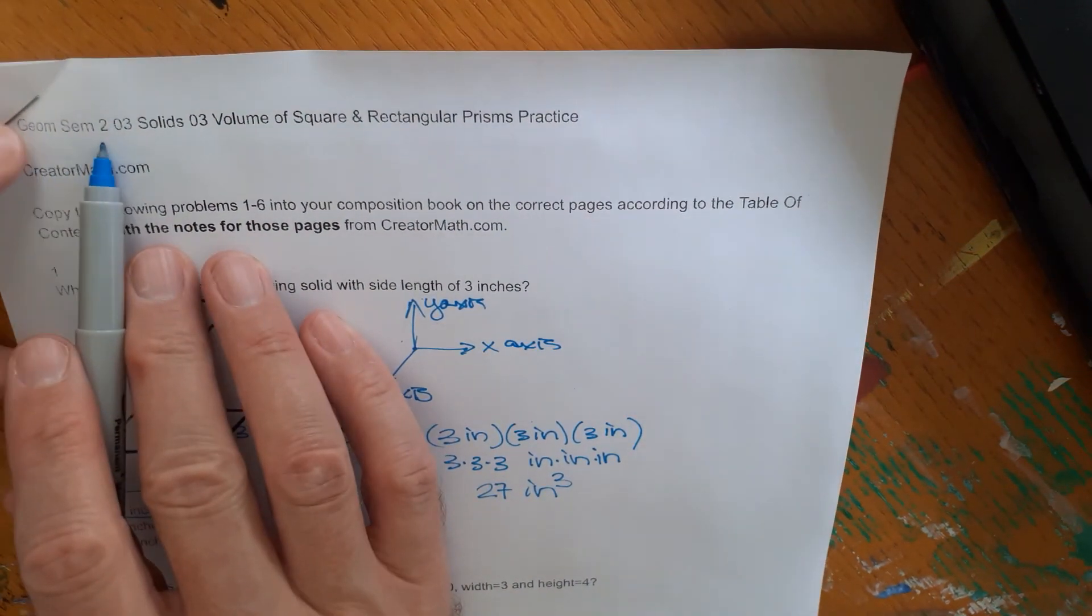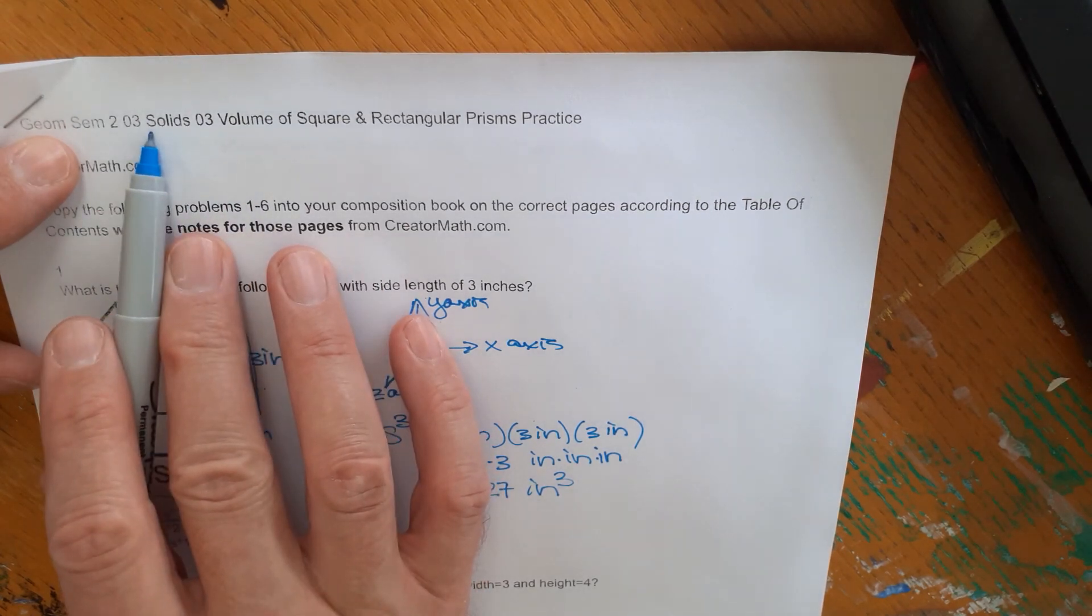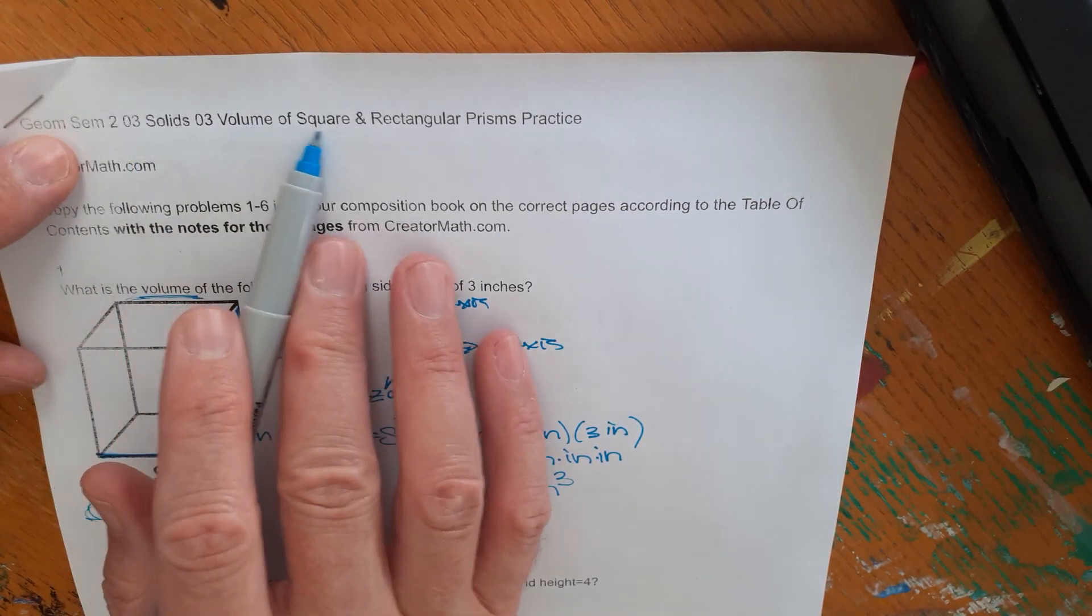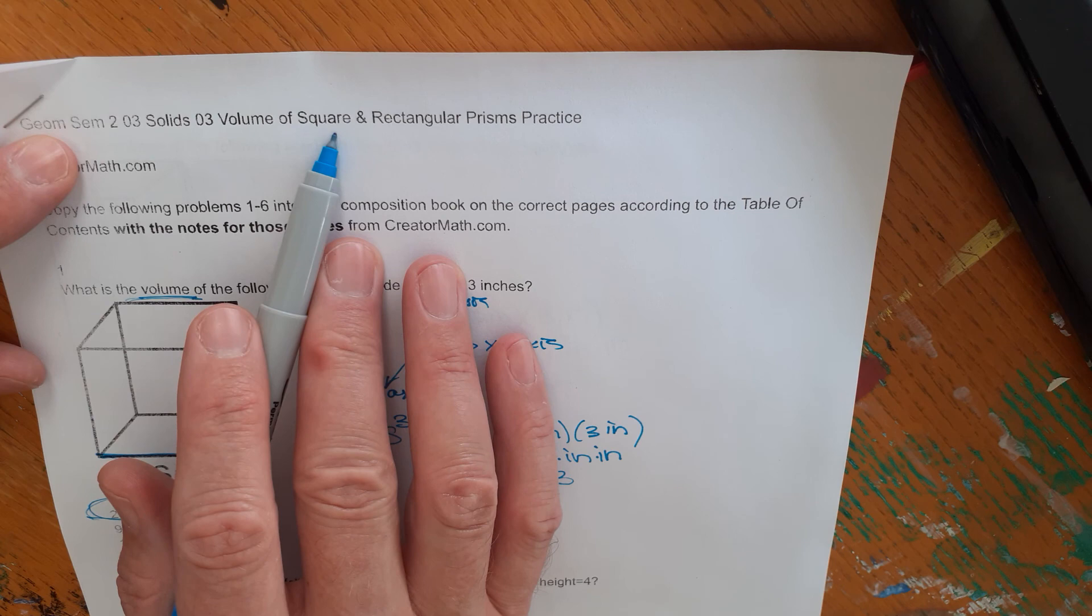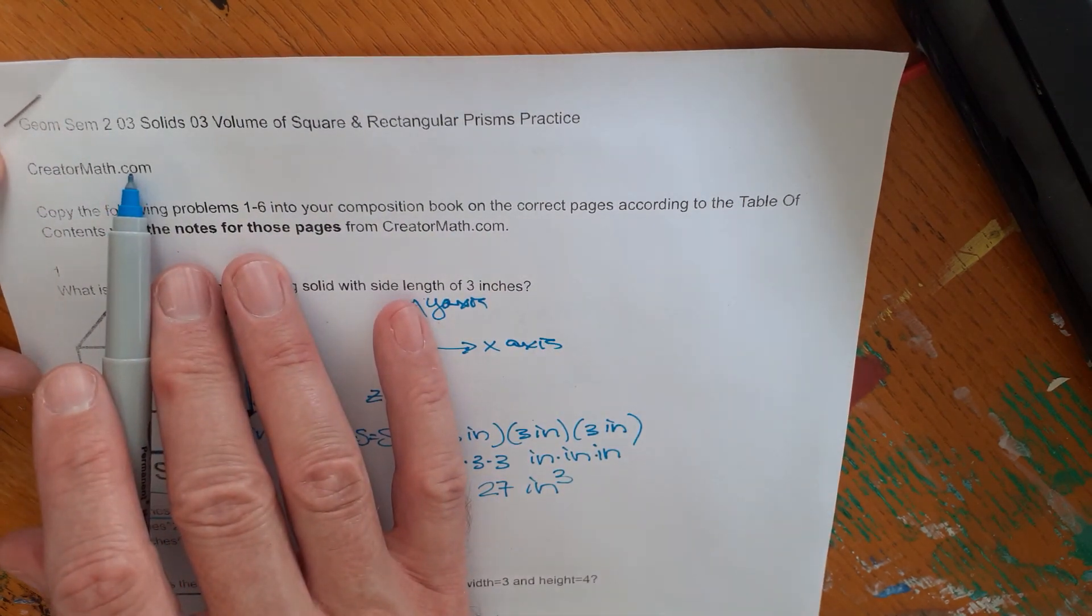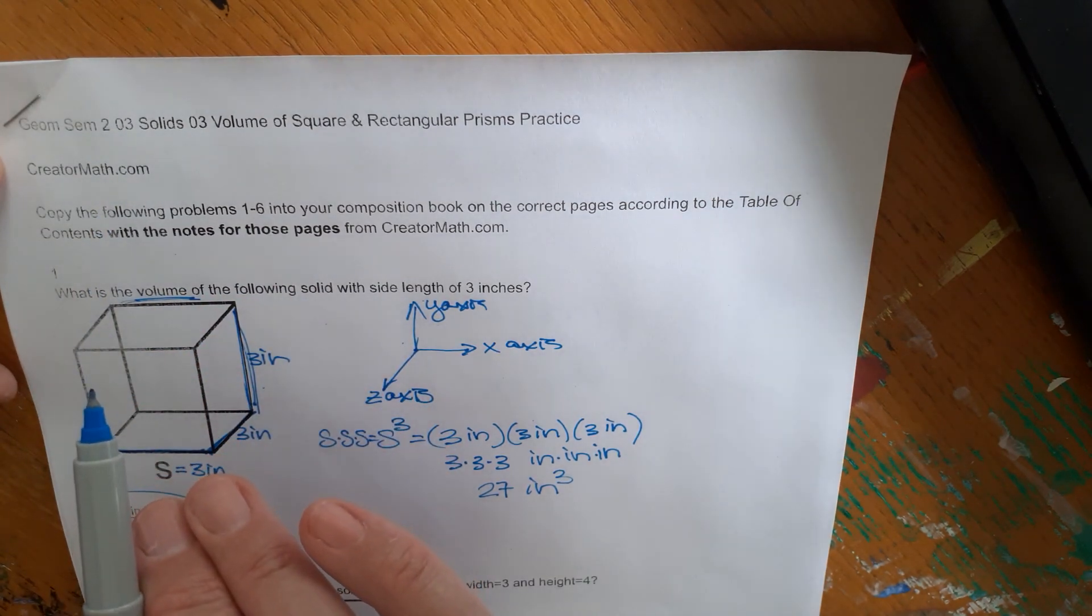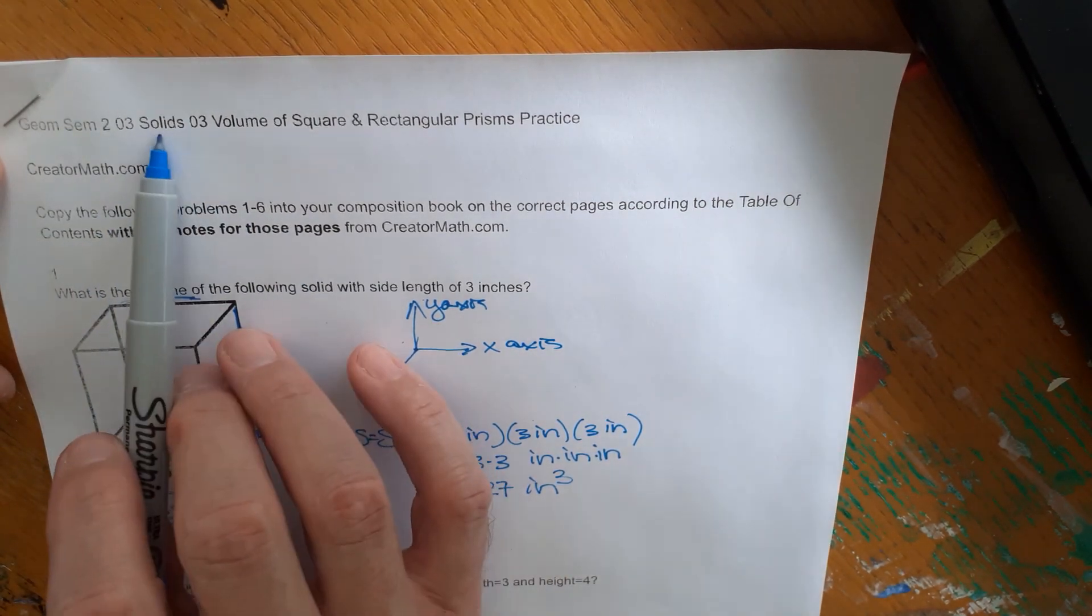This is from Geometry Semester 2. This is the third unit on solids. And it's the third lesson in there called Volume of Square and Rectangular Prisms Practice on creatormath.com under the Geometry tab, down under this unit, under solids.